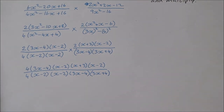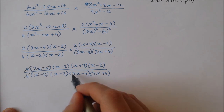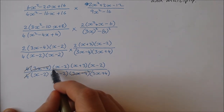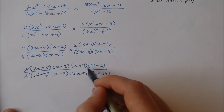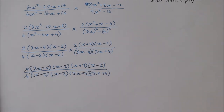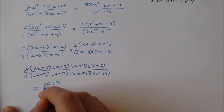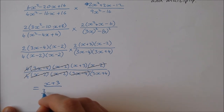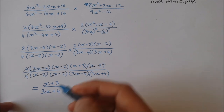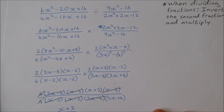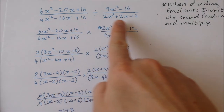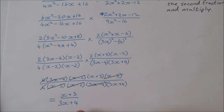Now I look at what cancels. I can divide above and below by 4, by (3x minus 4), by (x minus 2), and by (x minus 2) again. That leaves me with (x plus 3) over (3x plus 4). So when I divided these two fractions, the answer simplified right down to x plus 3 over 3x plus 4.